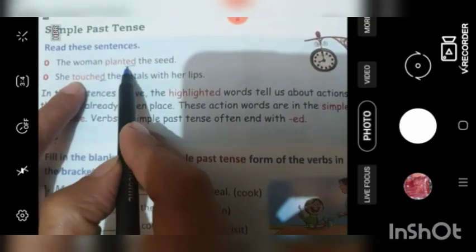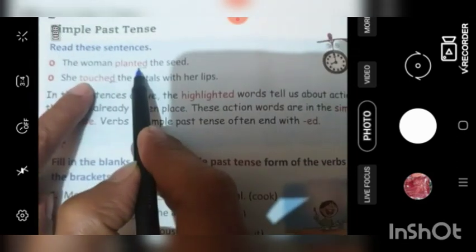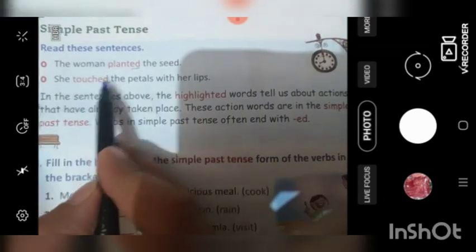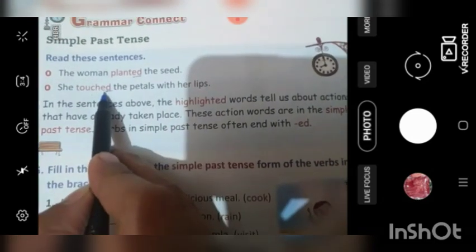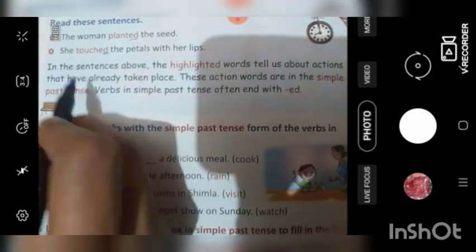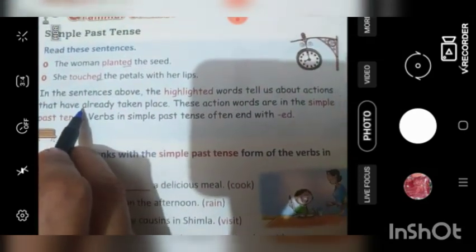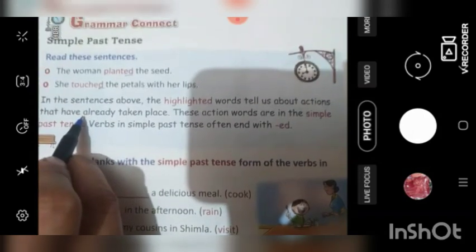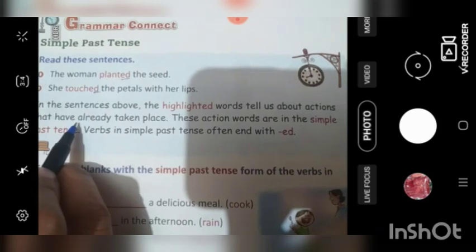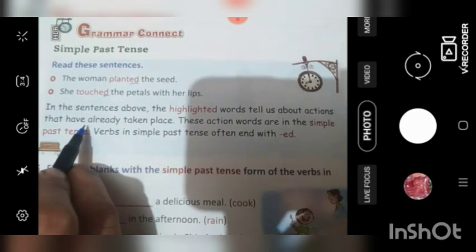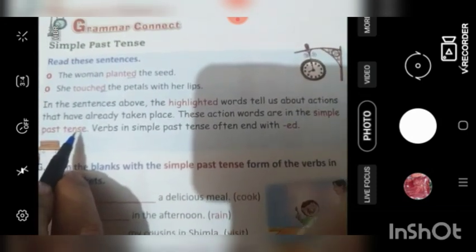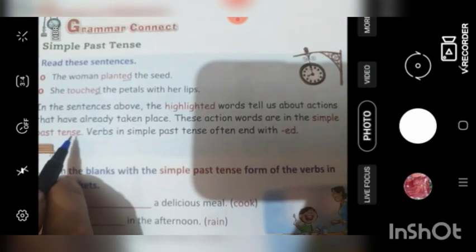To beeta, jahaan par bhi action words, aapne pada hai na action words. Jho batathe hai kya kama ho raha hai. Action words mein agar ED laga hootah hai, it means woh actions kabhi pehle huay hai. Agar aap kehthe ho, Mane kal Doraemon dekha tha. To aap kya bologhe? I watched Doraemon yesterday. Watch ek word hai. Agar ED agar humne laga diya, to it will become past tense.